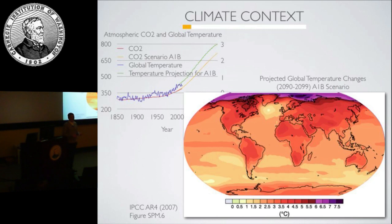This orange line is an IPCC scenario where we basically do business as usual, without a lot of mitigation in carbon emissions. The green line is the temperature rise that goes along with that. Over the past 150 years, we've had about 0.8 degrees C of warming, and we're expected over the next 100 years to have roughly 3.5 degrees C on average. The warming we see is not uniform — land masses, Arctic, and Antarctic areas are going to have increased warming, and these are really areas where we have large land ice sheets.